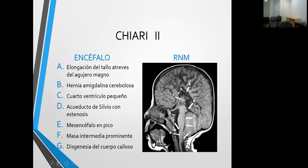Las amígdalas cerebelosas van a descender por el agujero magno hacia el canal cervical. Hay grados: pueden descender 7, 4 o 3 milímetros dependiendo del caso. Eso comprimirá la parte inferior del bulvo y la parte superior de la médula, dando síntomas como alteraciones en los pares craneales bajos, trastornos de la deglución, problemas respiratorios, cuadriparesia o espasticidad. En ese rubro es donde nosotros como neurocirujanos podríamos aportar algo hacia la mejoría del paciente.